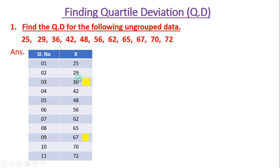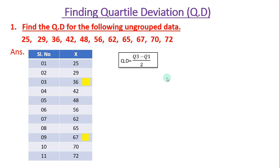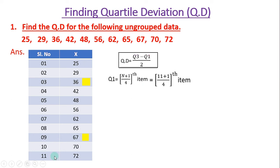What is the formula to find quartile deviation? Quartile deviation is equal to Q3 minus Q1 divided by 2 — that is, third quartile minus first quartile. Now, how to find Q1? The first quartile is the (n+1)/4 th item. Since n is 11, that is (11+1)/4 = 12/4 = 3rd item.